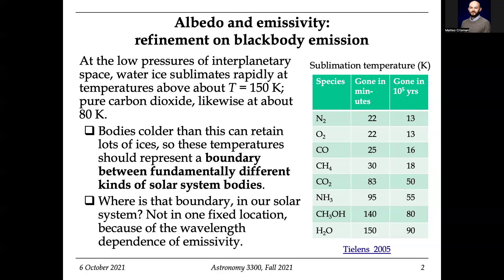Albedo is how reflective something is. We say something is white in that it reflects all light, and something is dark in that it absorbs all light. But of course that's not really the whole story, because we can have objects that are fully transparent at one wavelength and fully opaque at another.